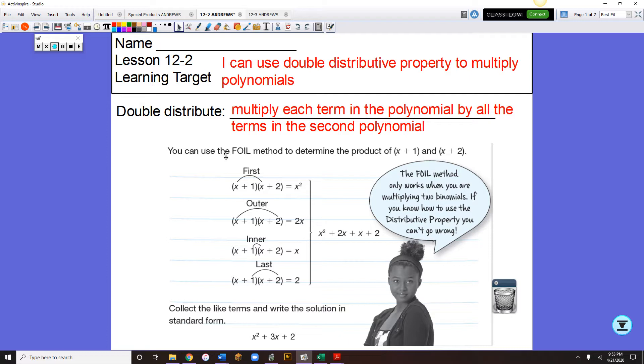If you talk to your parents or an older sibling, they might have learned something called FOIL. FOIL works great if you have two binomials.